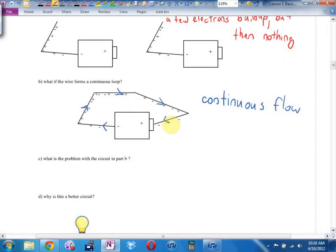What if the wire forms a continuous loop? We get a continuous flow. Sorry, from negative to positive. I said from positive to negative. From negative to positive. We get a continuous flow. This is a bad circuit though. Part C says, what's the problem with the circuit in part B? If I go to our ski hill analogy, Connor, we have people being lifted up to nine volts, but there's no ski hill, yet they do have to get down to the bottom. This is a cliff.